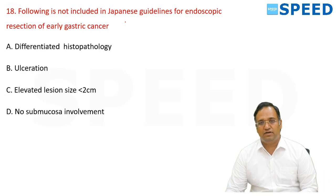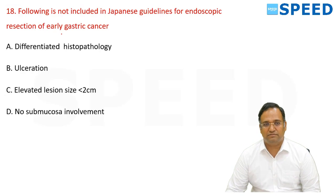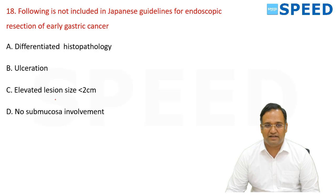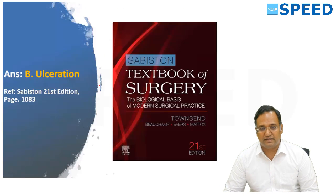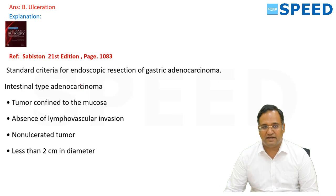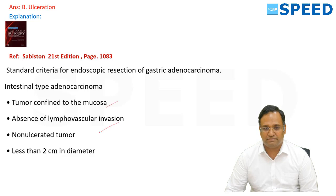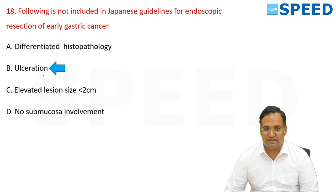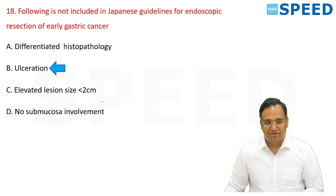Regarding the Japanese guidelines for endoscopic resection of early gastric cancer — the answer that is NOT included is ulceration. The standard criteria are: tumor confined to the mucosa, absence of lymph node involvement, non-ulcerated tumor less than 2 cm in diameter, and differentiated histopathology. The option given is 'ulceration,' meaning the correct criterion is non-ulcerated.